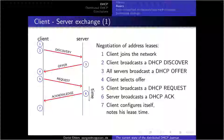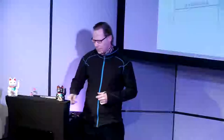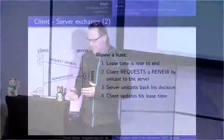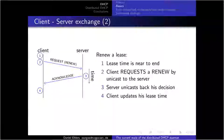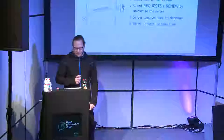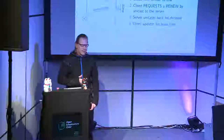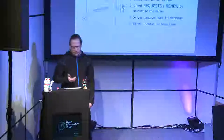In the last step, the client can configure itself with the information provided. All these communication steps are broadcast through the whole network. An address has a lease time, so at some point the lease nears its end and the client needs to renew. Now that it has an address, it can send a unicast packet directly to the server and ask for a renewal, and hopefully the server will grant that address again for another hour or so.